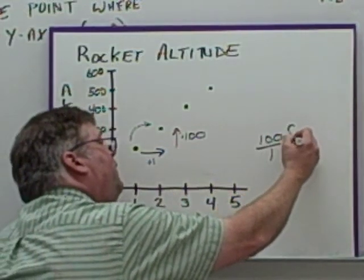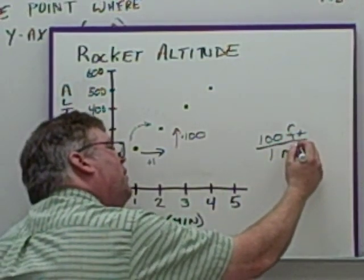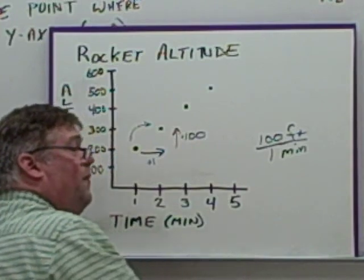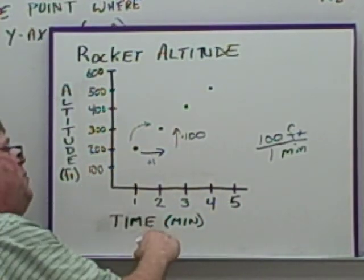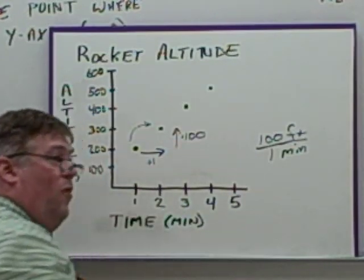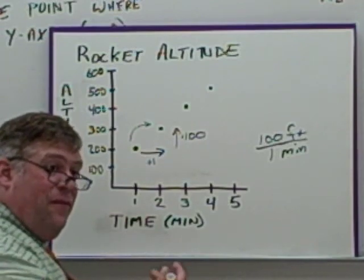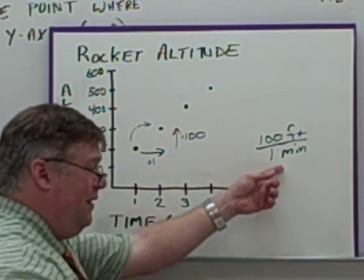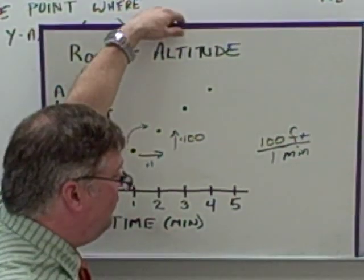That is our constant rate of change, 100 over 1. It's 100 feet, 1 per minute. So our full answer would say, the rocket goes up 100 feet in 1 minute. Again, you would write that out in a full sentence. This is not enough. You've got to write it out using a full sentence and words.